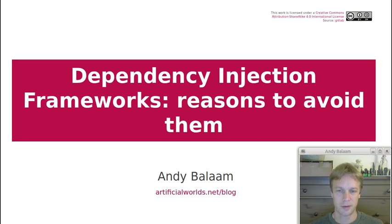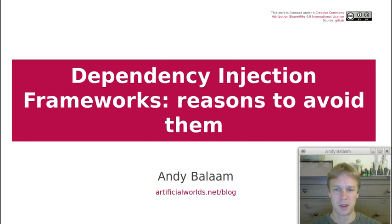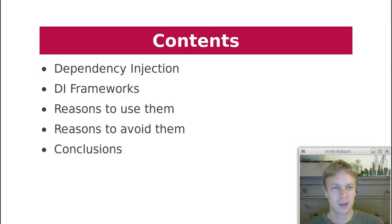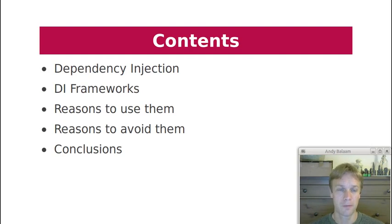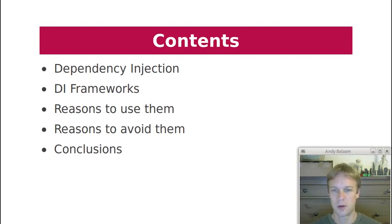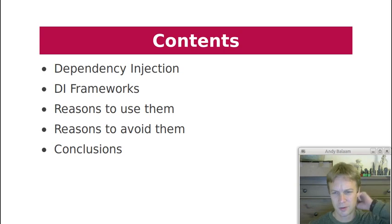It's clear that Guice and other dependency injection frameworks are written by clever people to solve real problems. I want to try and suggest that maybe some of those problems could be solved in different ways. We'll start off by talking about what dependency injection is, then we'll talk about what a dependency injection framework is, which is a different thing. I'll outline some reasons why you might want to use them and some reasons why you might want to avoid them. There'll then be a slight rant and we'll sum up at the end. So strap in.